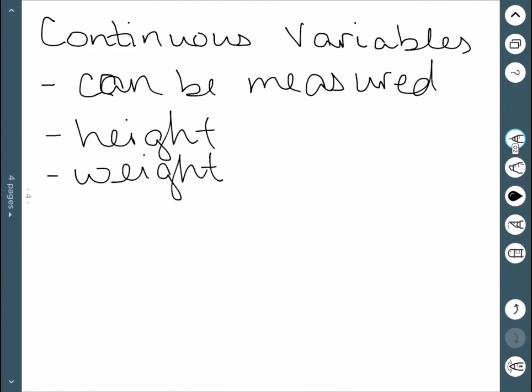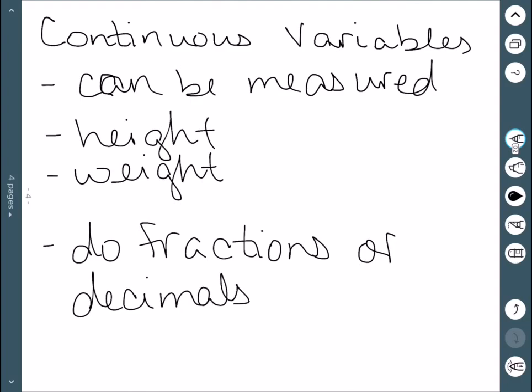In particular, with continuous variables, the main thing is do fractions or decimals make sense? So with discrete variables, when we talked about the number of people in a room, a fraction or a decimal of a person in a room wouldn't make sense. However, if we're talking about height, saying someone is five feet, five and a half inches does make sense. The only exception to this rule would be money, in which case decimals make sense. However, it is still discrete because we do count it.